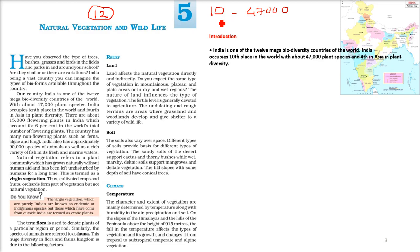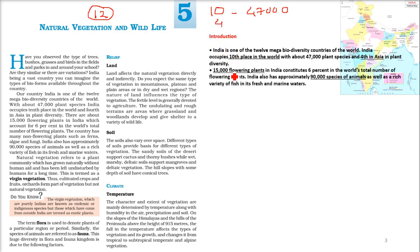If you come to Asia, that is our continent, we have fourth place in terms of plant diversity. There are 15,000 flowering plants, which constitute 6% of the total flowering plants of the world.